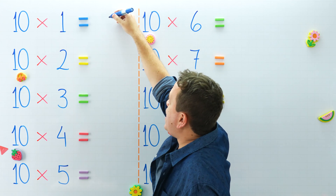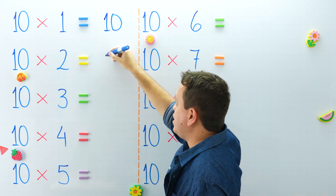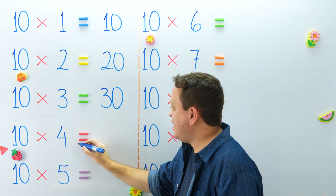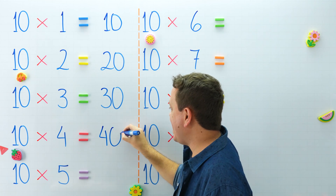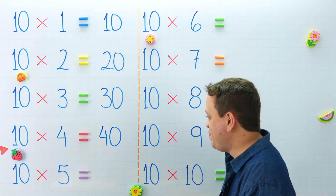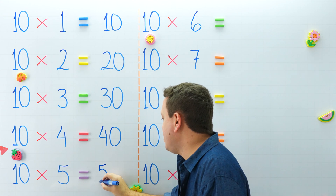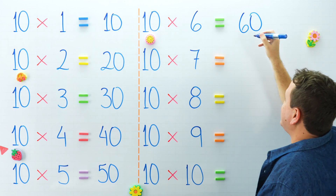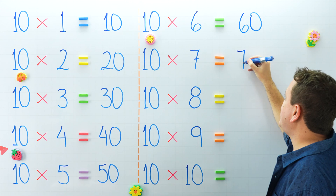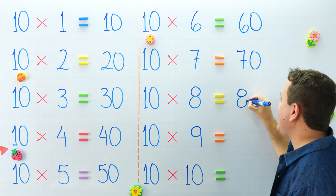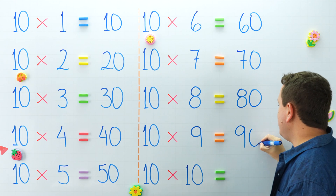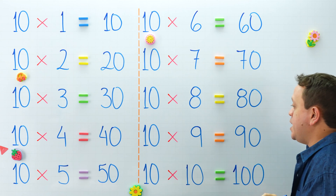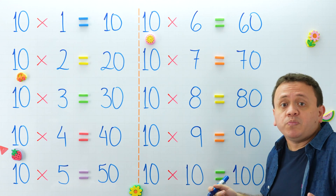And we finish with the 10 times table. 10 times 1 equals 10, and 10 times 2 equals 20. 10 times 3 equals 30. And 10 times 4 equals 40. One more, 10 times 5 equals 50. On this side, 10 times 6 equals 60. 10 times 7 equals 70. And 10 times 8 equals 80. 10 times 9 equals 90. This timetable is so easy, right? Yes it is. And 10 times 10 equals 100. Pay attention — all the products in the 10 times table end with 0, and there is no other choice.